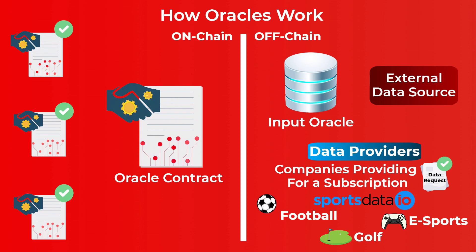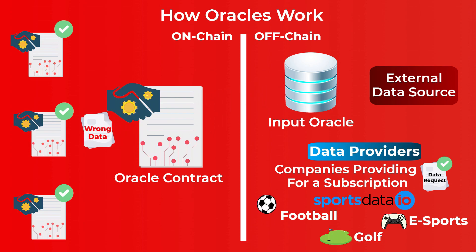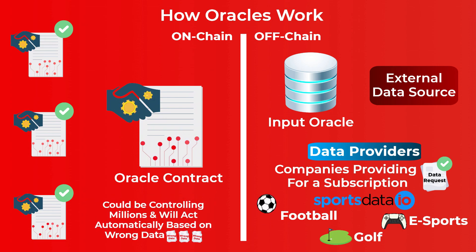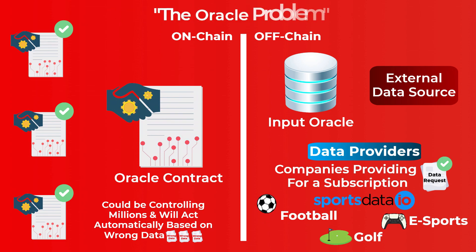Using only one oracle node creates a big problem: that single centralized oracle node can manipulate or provide wrong data to the smart contract if the person operating the node was paid to do so. This smart contract could be controlling millions of dollars and will act automatically based on that wrong data. This problem is known as the oracle problem.